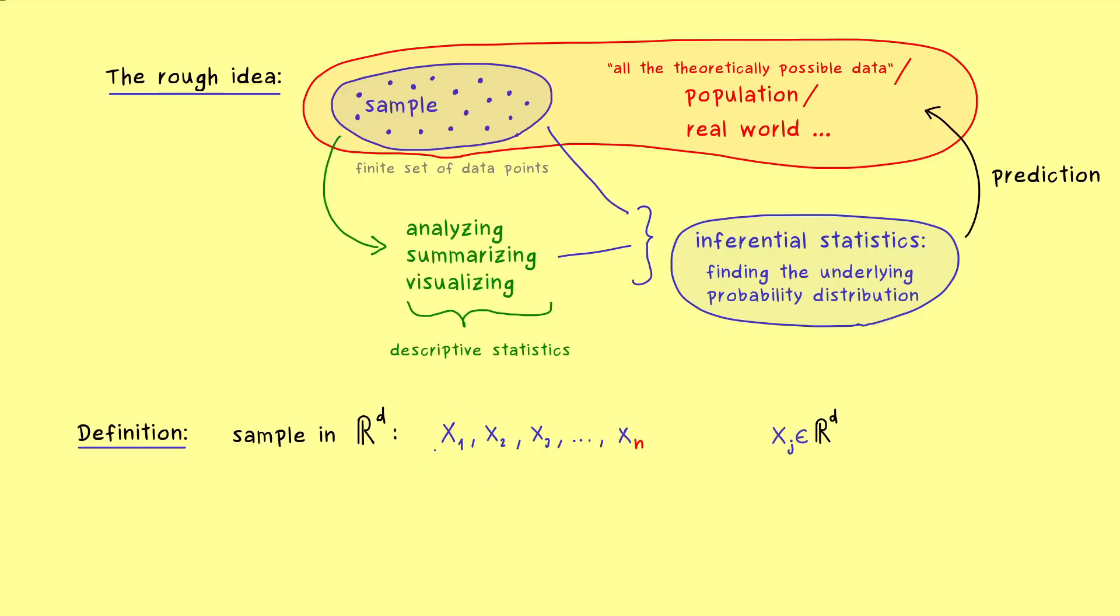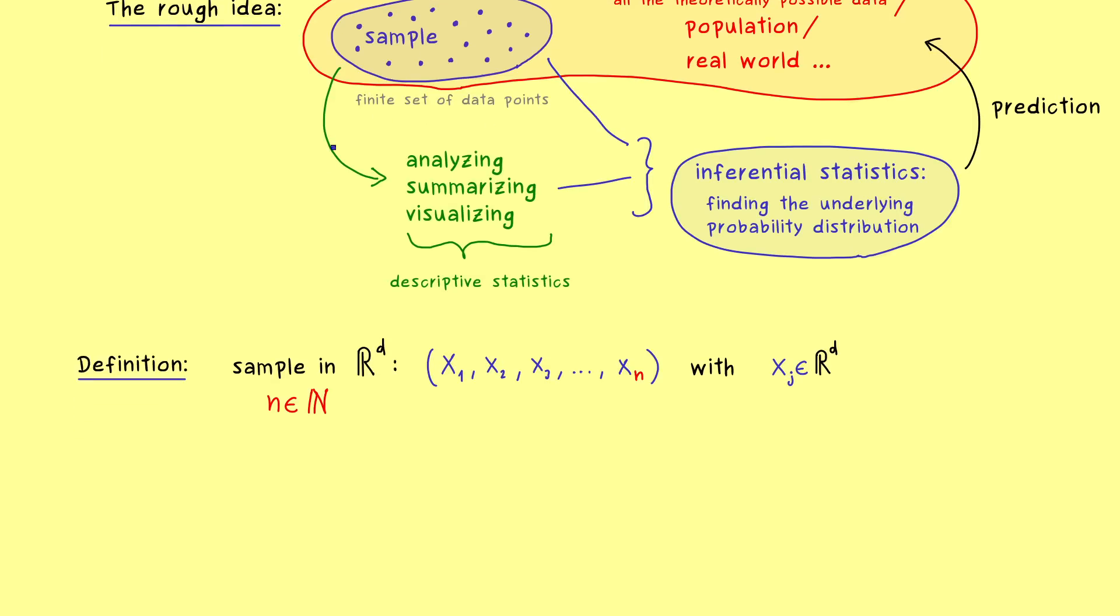So this is already it, we just have a finite set with vectors in R^d. And usually we say we have a tuple, so we have an ordered set. So the size of the sample is n and n is a fixed natural number. So this is how we collect our data and then we can just say that we have a sample of size n.